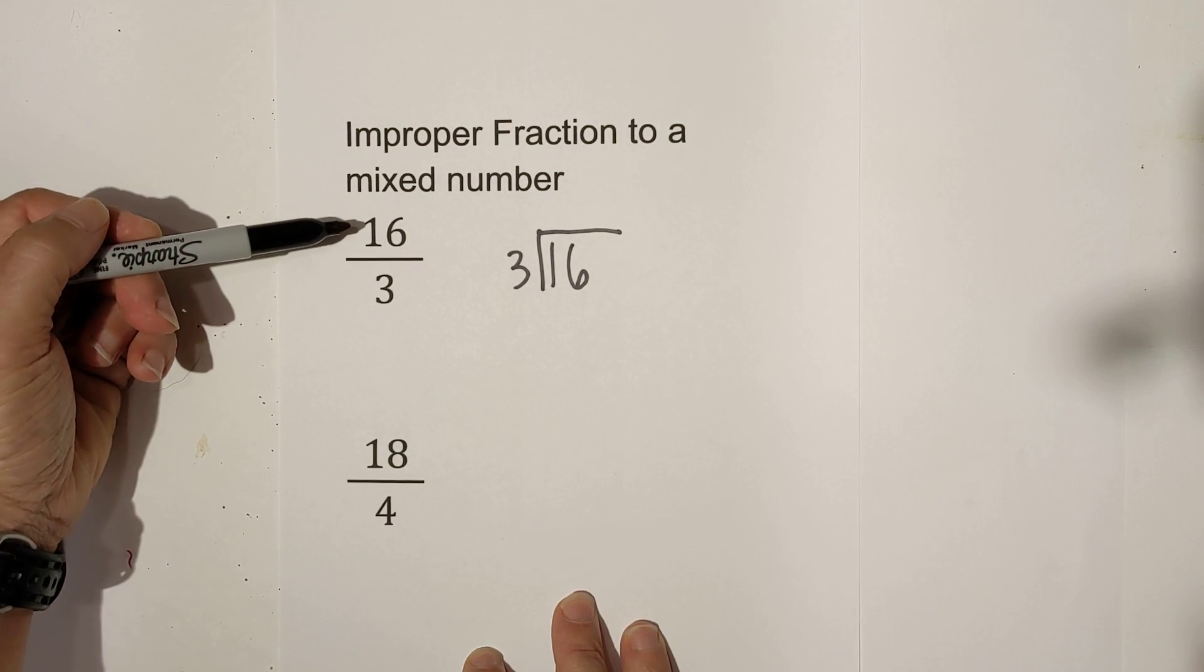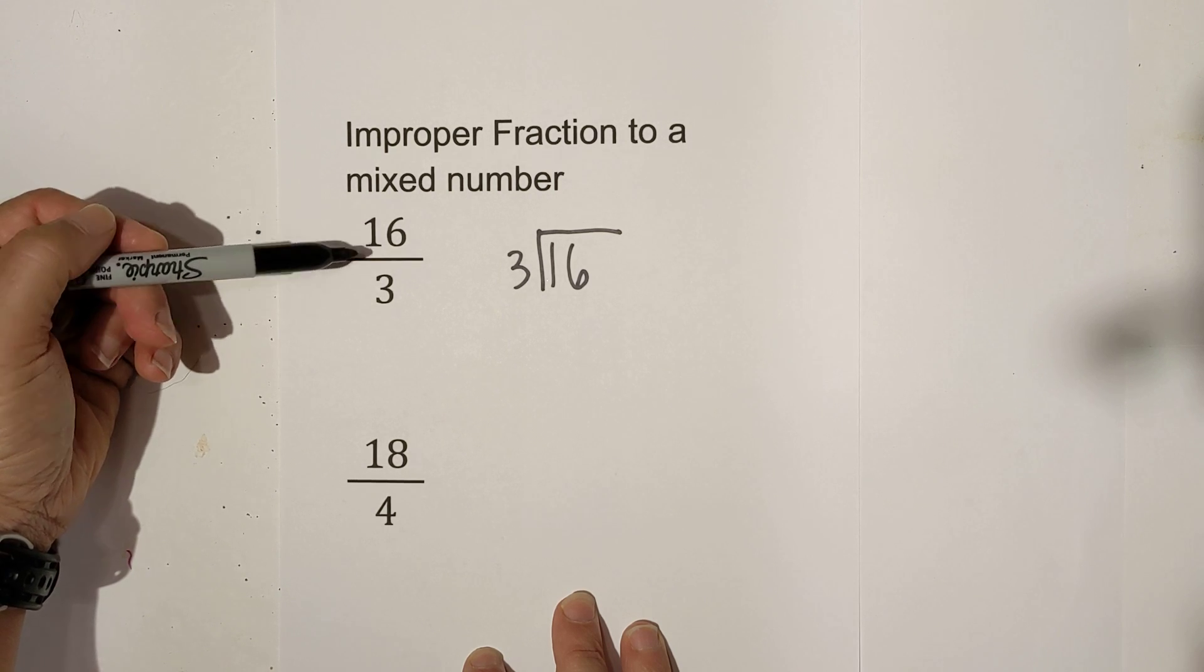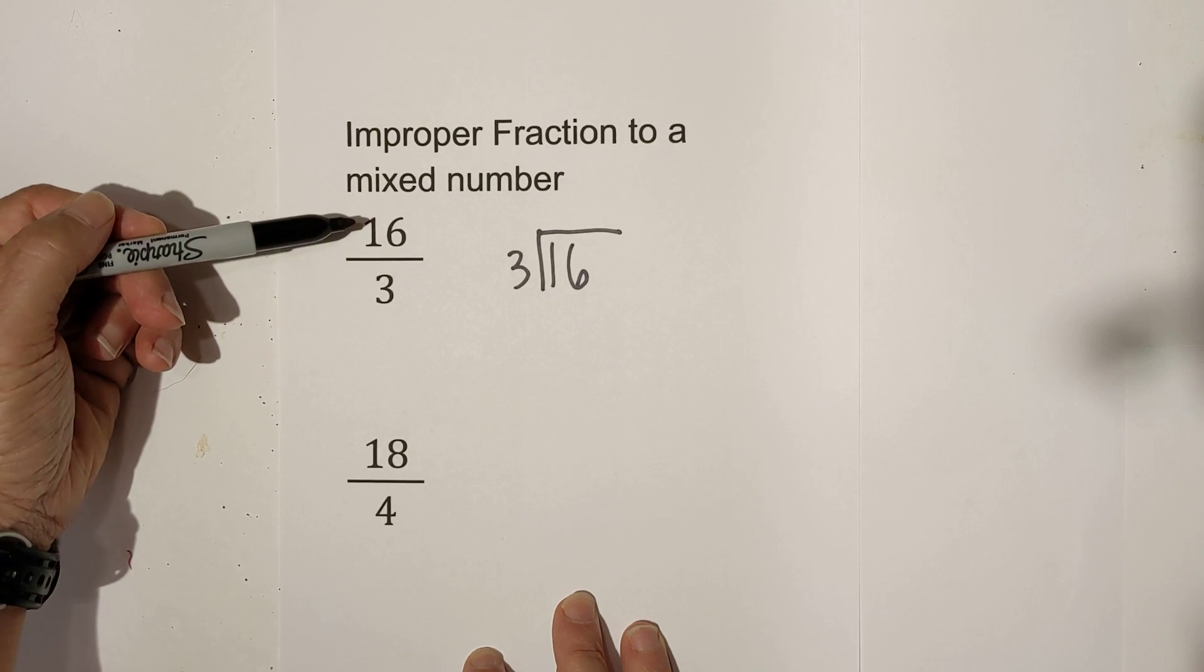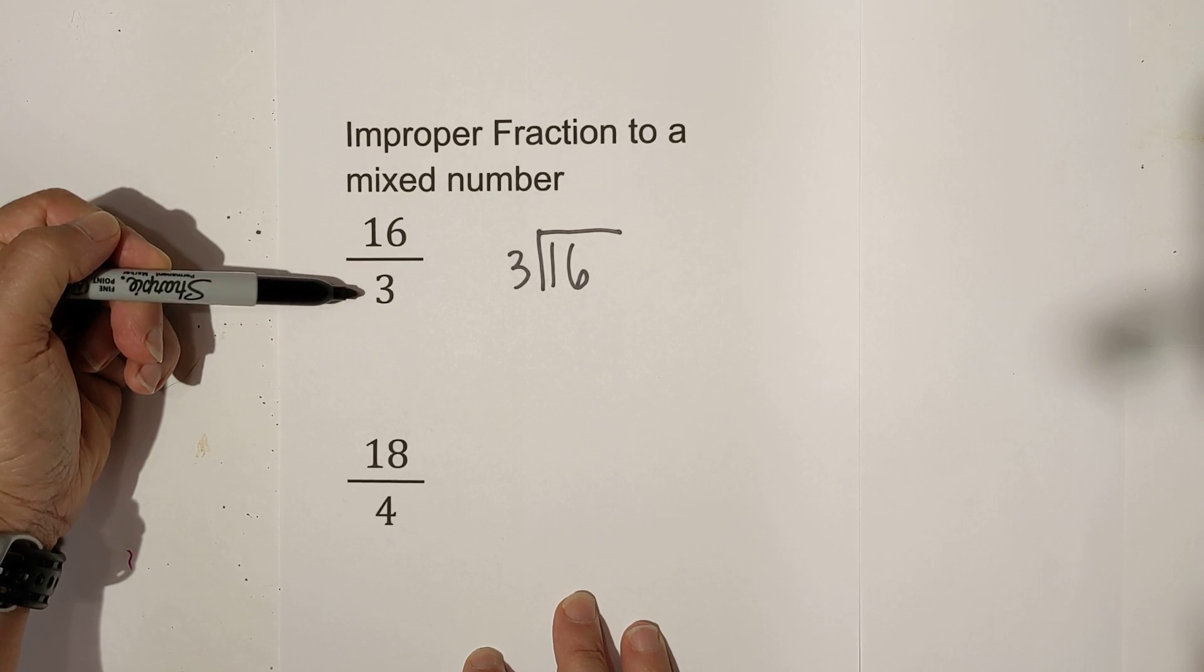An improper fraction is one in which the numerator is equal to or larger than the denominator, or in other words the top number is equal to or larger than the bottom number.